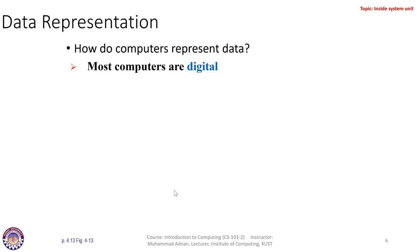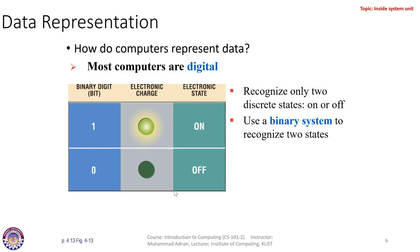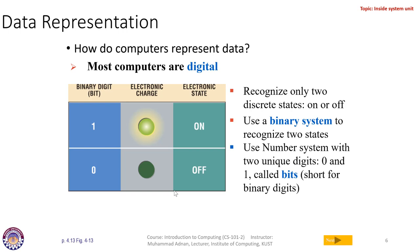The next topic is how the computer represents data and how data is processed inside the system unit. For us, we communicate with a computer in a high-level language or English — we have alphabets, numbers, special keys, arrow keys, and control keys. But a computer recognizes only two digits: one and zero. These can also be represented using electronic charge — a specific area is charged or not charged. One and zero are called binary digits; binary means two digits, and one digit is called a bit.